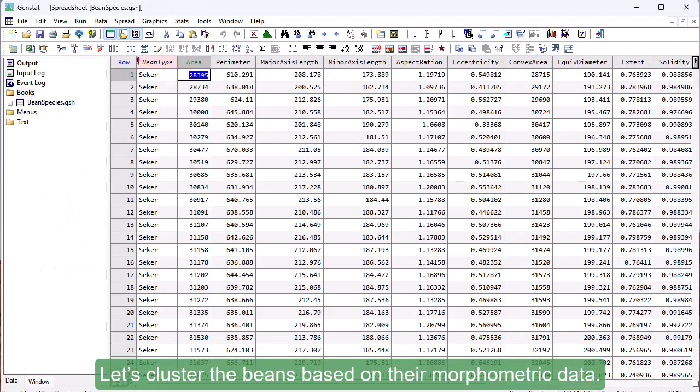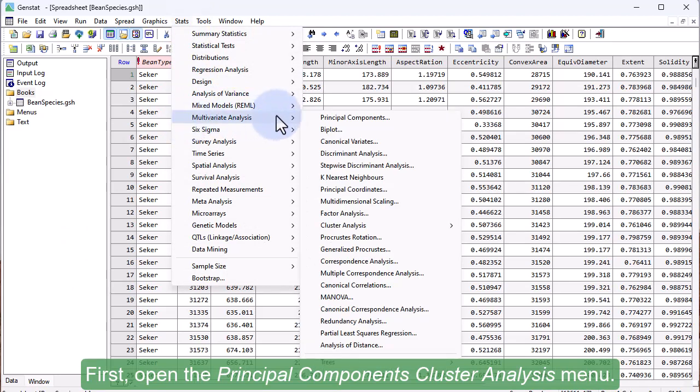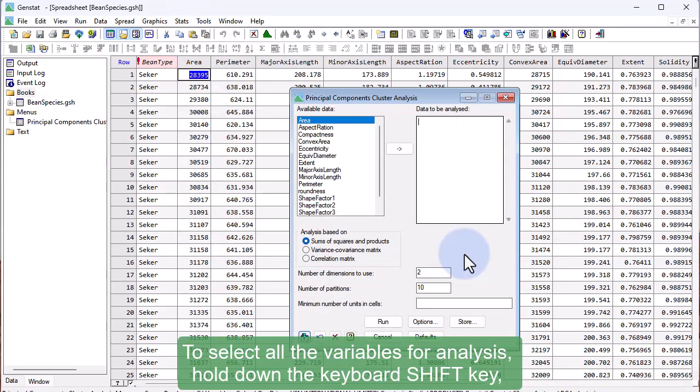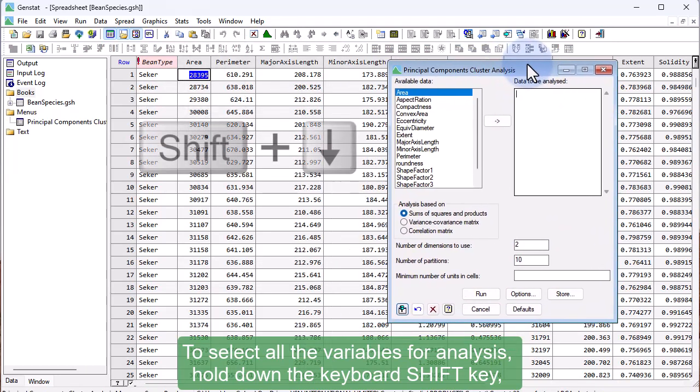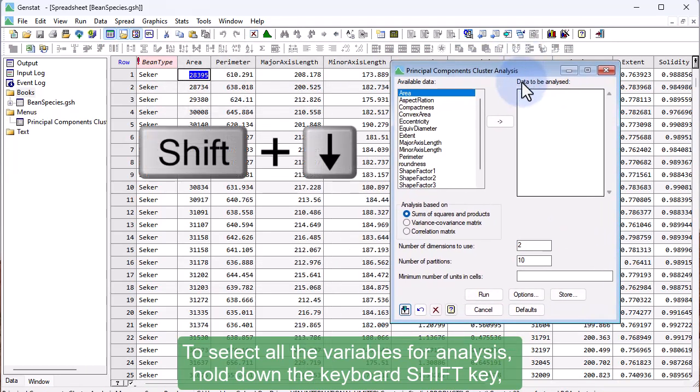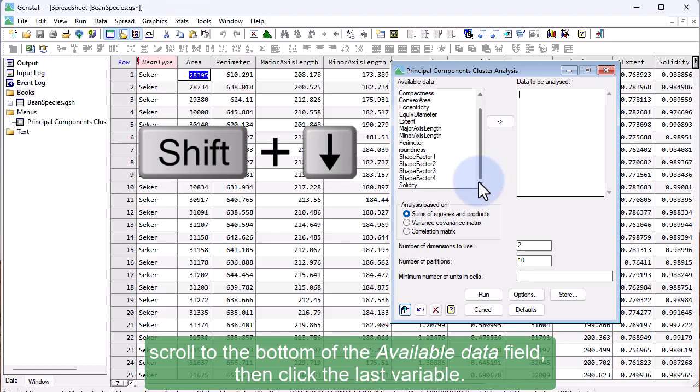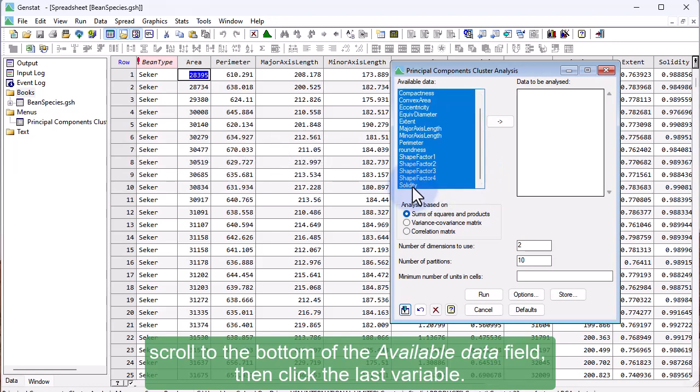Let's cluster the beans based on their morphometric data. First, open the Principal Components cluster analysis menu. To select all the variables for analysis, hold down the keyboard Shift key, scroll to the bottom of the available data field, then click the last variable.